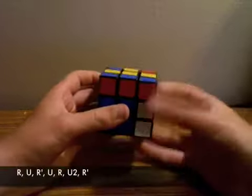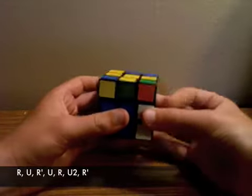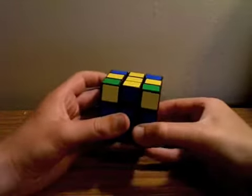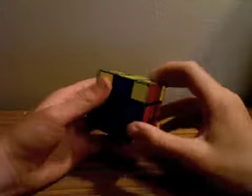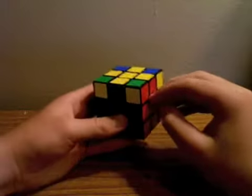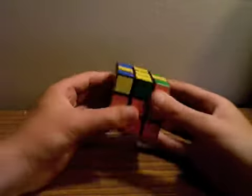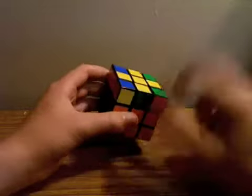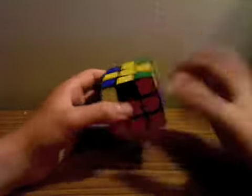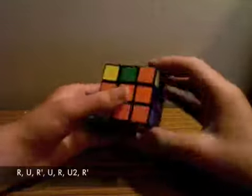R, U, R', U, R, U2, R'. Now, that will turn into the case where you have opposite to each permuted side an unpermuted side. So then, you'll simply hold the cube so that you have an unpermuted side front, unpermuted side to the left, and a permuted side to the right. Do the algorithm.